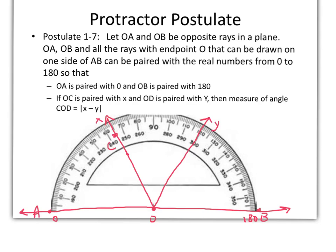So the measure of angle COD is equal to the absolute value of x which was 65 minus y. Now keep in mind you've got two scales here. Always use the same scale. This was 65 over here so I want to use this scale over here which was 120. So this is going to be equal to the absolute value of negative 55 degrees